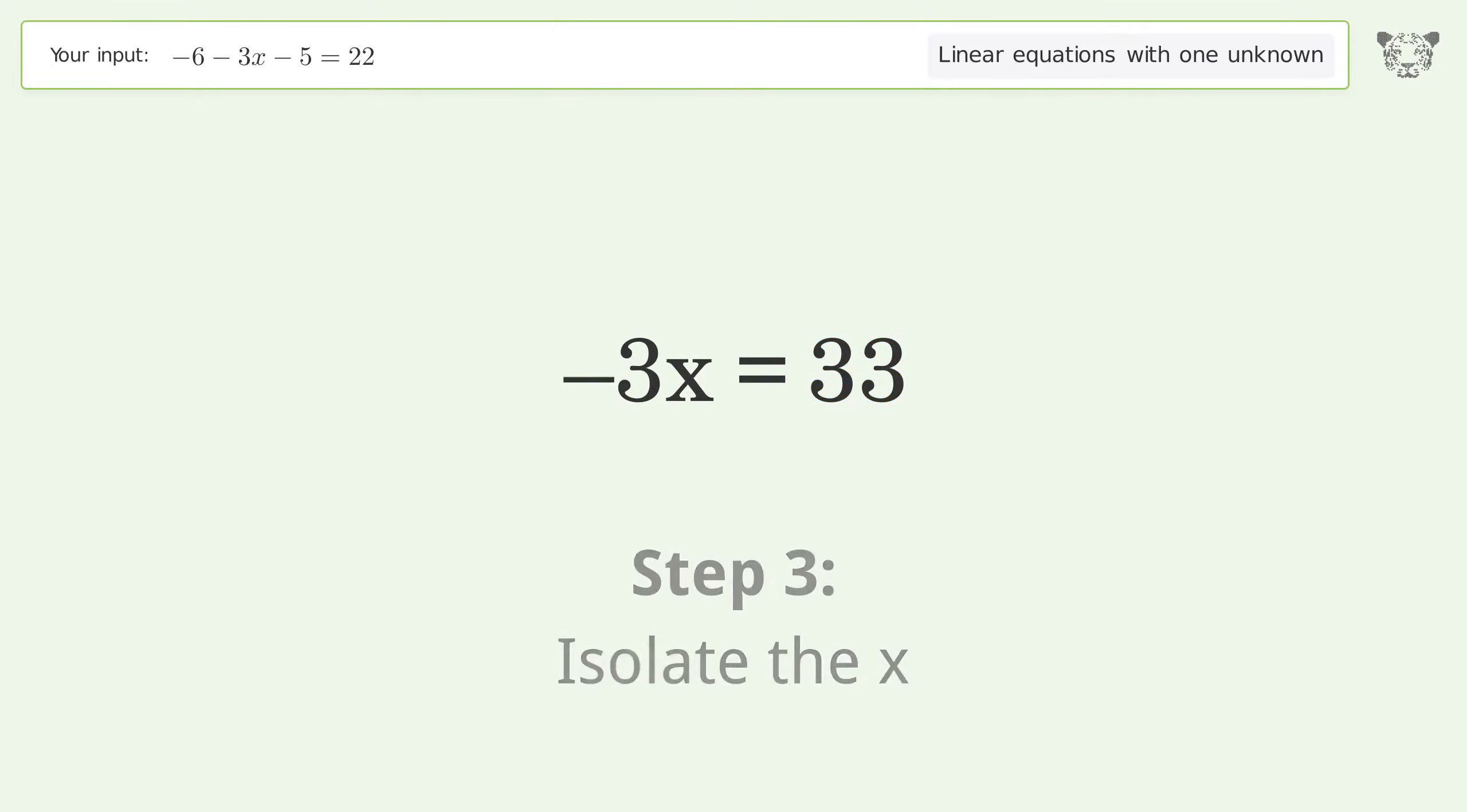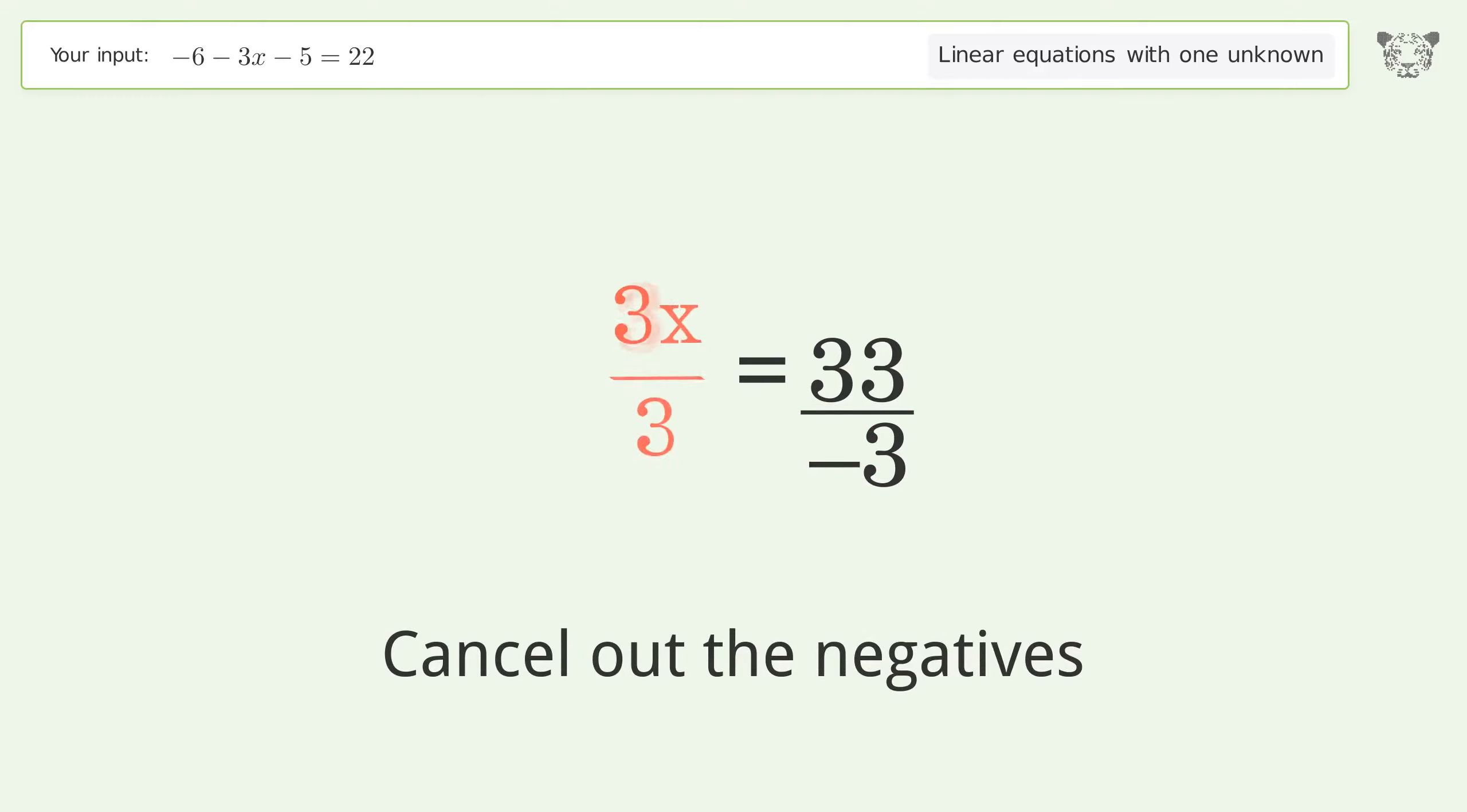Isolate the x: divide both sides by negative 3. Cancel out the negatives. Simplify the fraction.